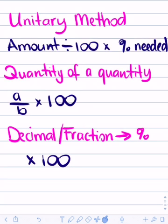The next formula is for a quantity of a quantity. Here you put quantity A divided by quantity B and multiply by 100. Whenever it asks you to convert a decimal or a fraction to a percentage, all you have to do is multiply by 100. Decimal or fraction to a percentage — just multiply by 100.